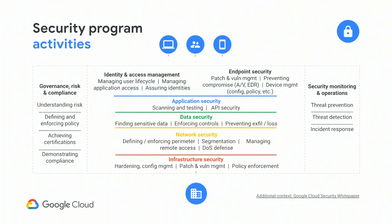Think of it like an eggshell: if you have a hard perimeter but once you're inside it's open, anybody who gets onto that network can then have free access to anything on the network — your EHR systems, your billing systems — anything that's on the network they have if they can compromise it.